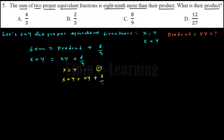The product of the two fractions is 8 over 9. We have one equation with one unknown. Substituting y = x into the equation, since x equals y, we get x plus x equals x times x plus 8 over 9. That gives us 2x equals x squared plus 8 over 9.